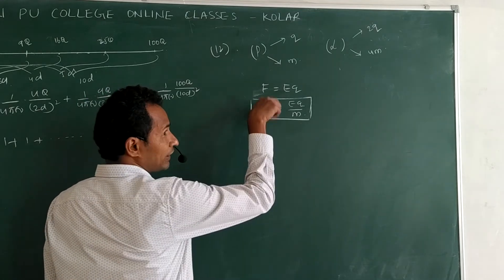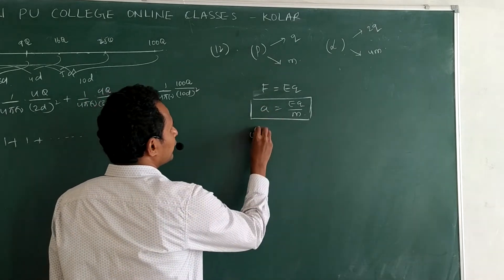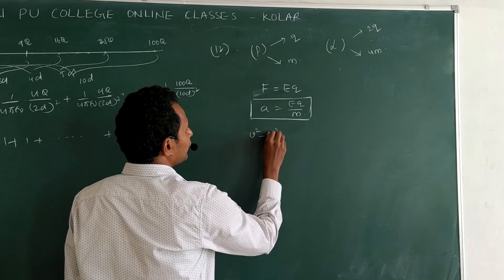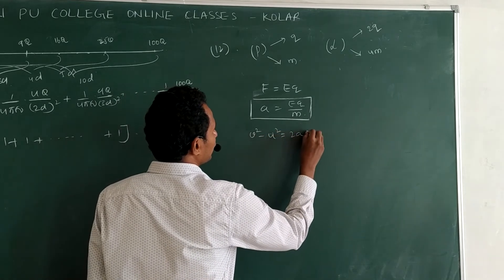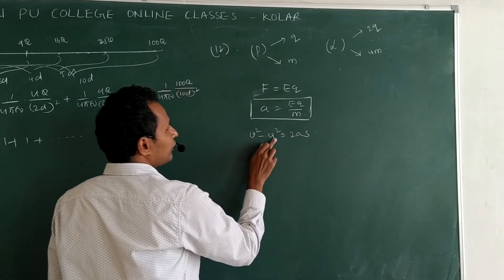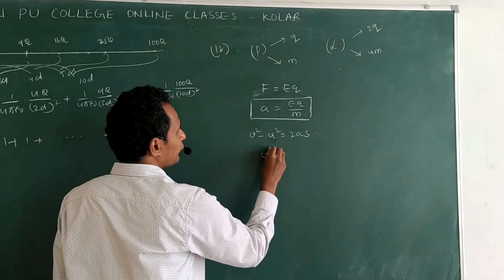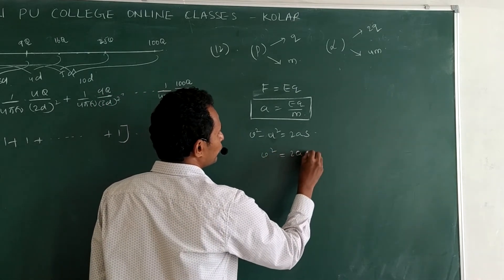And they are asking final velocities ratio. So initial velocity, they release, initial velocity 0. Then final velocity we can write using this equation. Initial velocity 0. Then final velocity we can write V square is equal to 2AS.